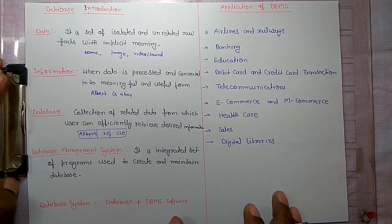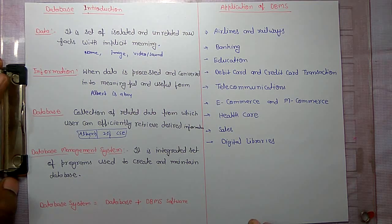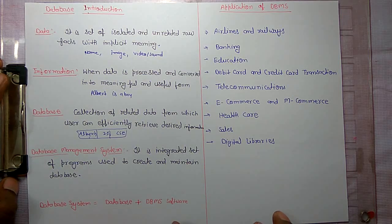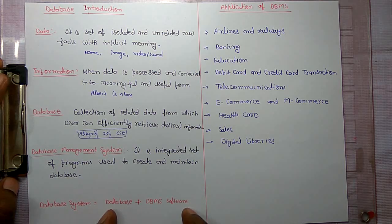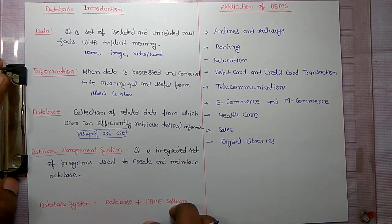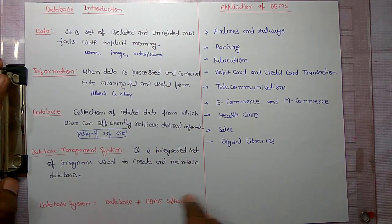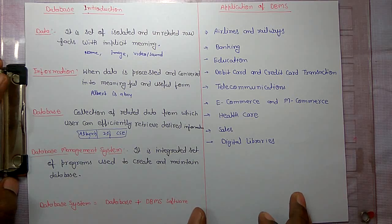With a database management system, you can ensure security and proper data protection. Storing, defining, retrieving, and manipulation of data — we can all perform these in a database management system. Database system is a collection of database and DBMS software, which you can use to create, maintain, and retrieve data — for example, Oracle.